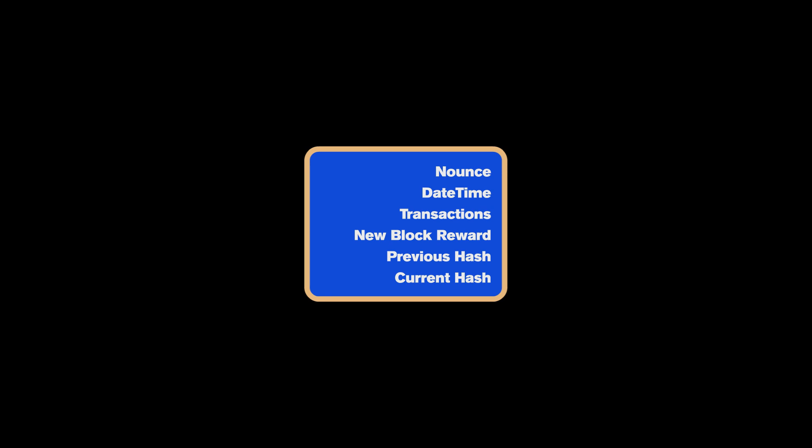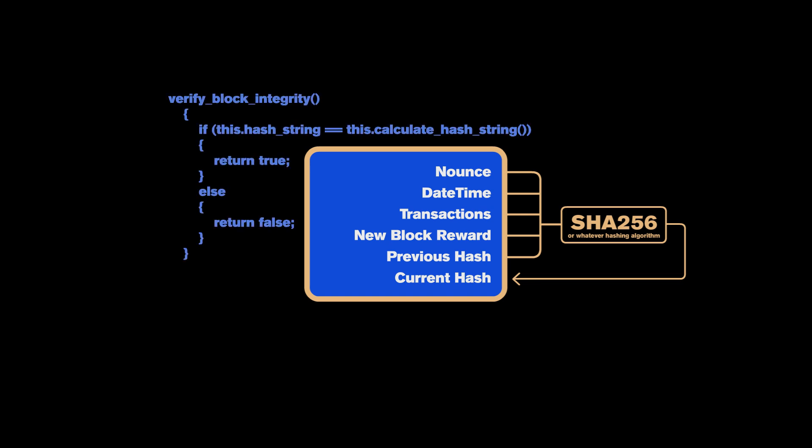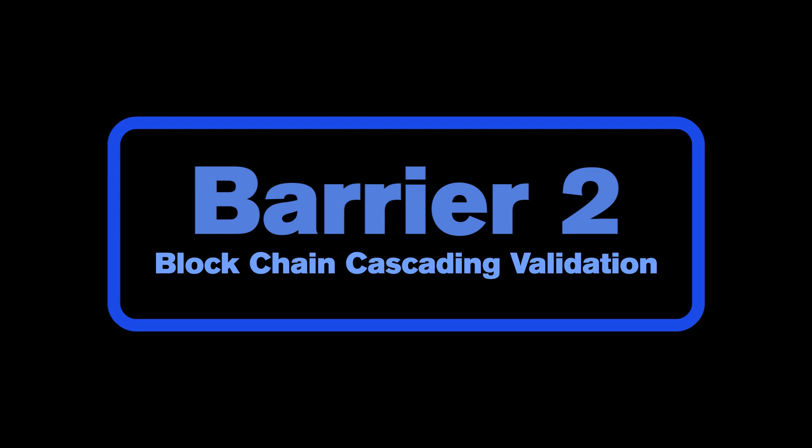Barrier one: internal block validation. Here is some of the data stored inside a single block. The hash that identifies the block is computed from all the data within it. If someone attempts to change even one tiny element of the block, the resulting new hash calculated from the modified block will not match the original hash — game over for whoever tries to corrupt the system. But what if someone tries to erase the record by replacing the old hash with the newly calculated one, bypassing internal hash validation? First of all, that's ridiculous unless whoever programmed the block validation is a complete novice.